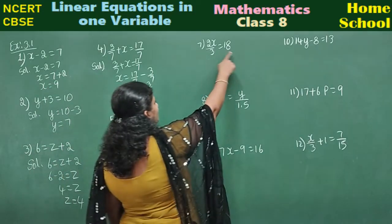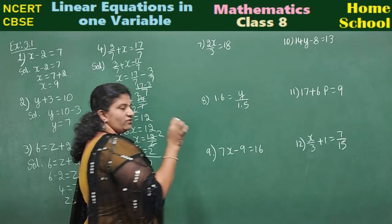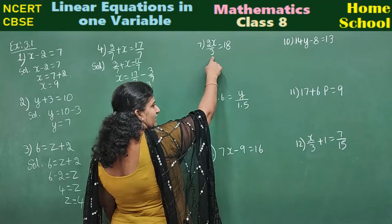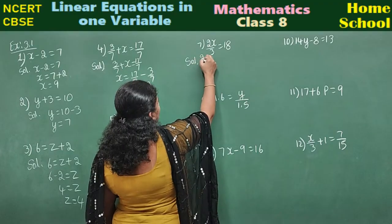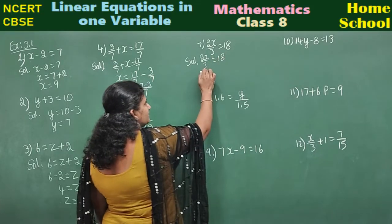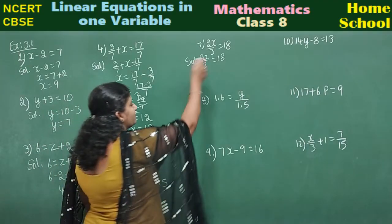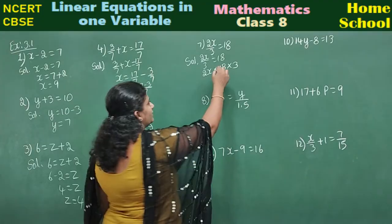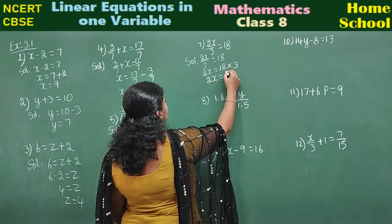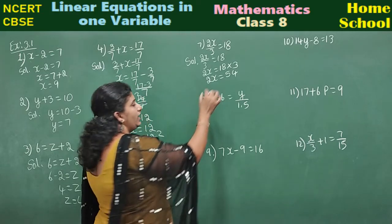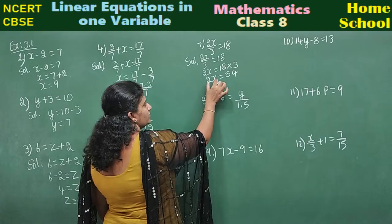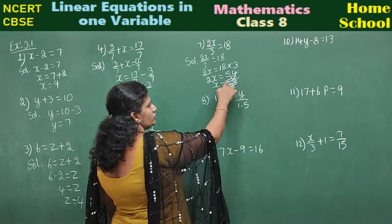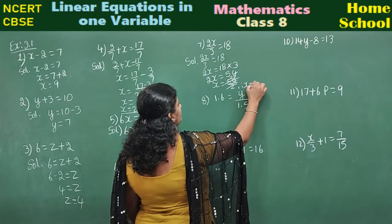Seventh: 2x/3 equal to 18. Variable x has a multiple 2 and a divisor 3. First, transpose 3 to the other side — it multiplies: 2x equals 18 into 3, which is 54. Then transpose 2 — it divides: x equals 54 divided by 2, which is 27.